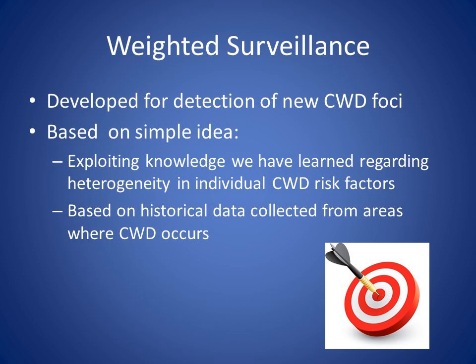The second study I'm going to talk about is a web application I developed for conducting weighted surveillance for chronic wasting disease. Weighted surveillance is not a new idea — its purpose is to detect new CWD foci on the landscape. The underlying idea is simple: disease does not act uniformly across a population; there's heterogeneity among individuals or demographic groups. Weighted surveillance exploits those differences and focuses on the demographic groups most at risk to find the disease as quickly as possible. It does require historical data to estimate those heterogeneities.